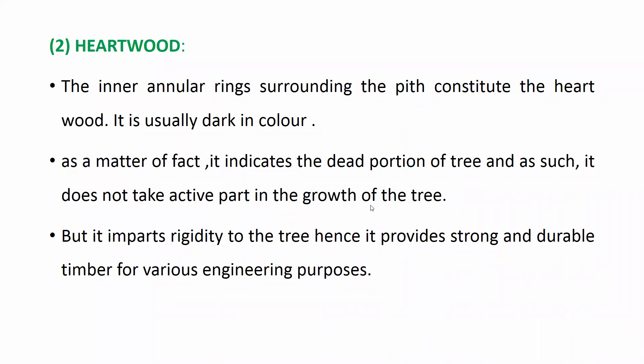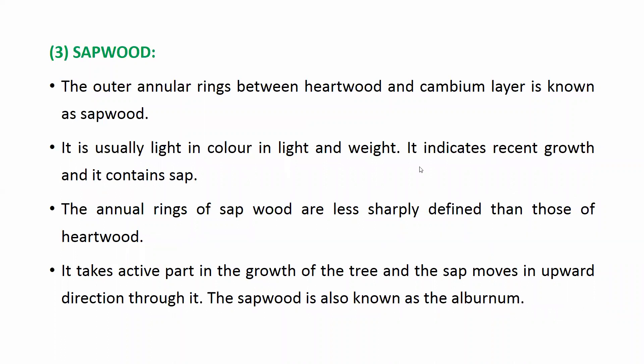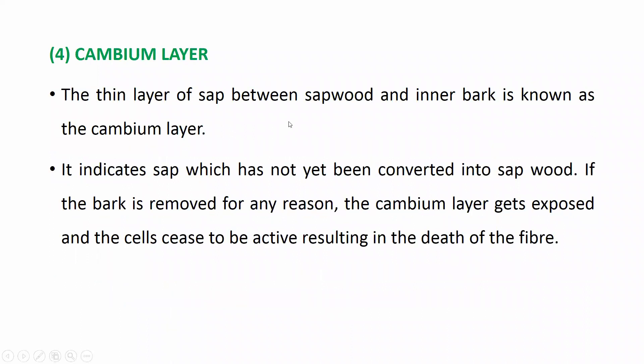Next is sapwood, which comes after the heartwood — the annular rings after the heartwood. The centermost is the pith, then heartwood, then sapwood. Sapwood is light in color and light in weight compared to heartwood, and it is the part that actually transfers water and nutrients for the growth of the tree. The pith and heartwood are dead portions.